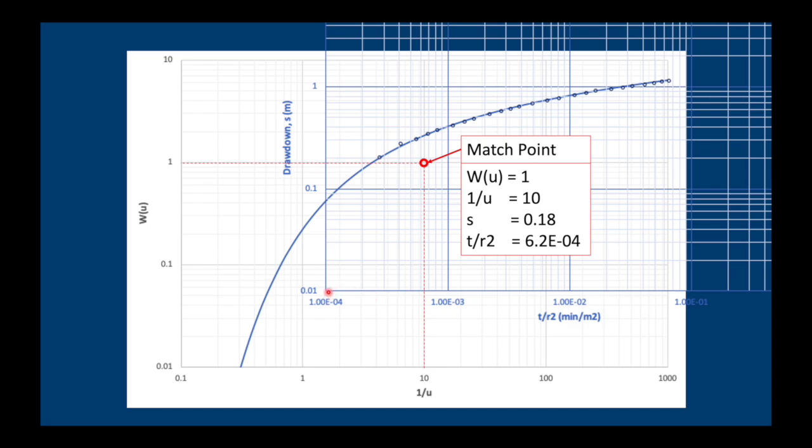s is approximately 0.18, and t over r squared is 6.2 times 10 to the minus 4.